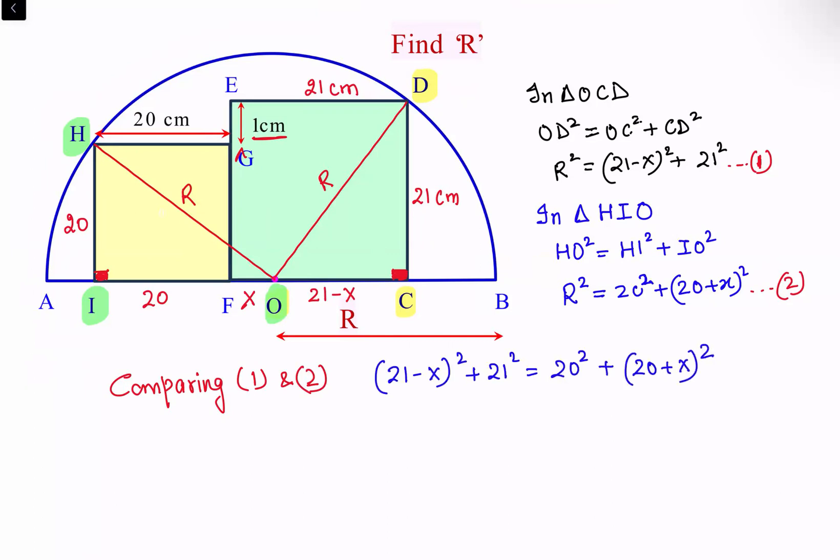So let's open the brackets. So we are getting 21 square plus X square minus 42 X plus 21 square. This is 20 square plus 20 square plus X square and plus 40 X. We have just applied a minus B whole square and a plus B whole square formula.